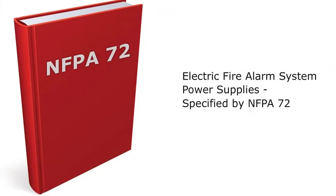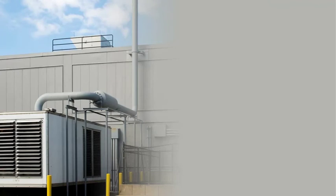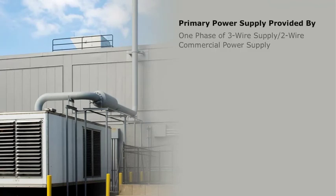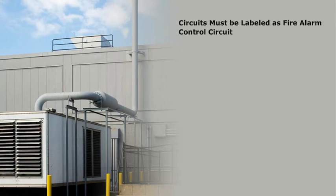The primary power supply can be provided by either one phase of a three-wire supply, or a two-wire commercial power supply, and must be on a dedicated branch circuit. The power supply can also be through a generator. Circuits must be labeled as fire alarm control circuit, and available only to authorized personnel.